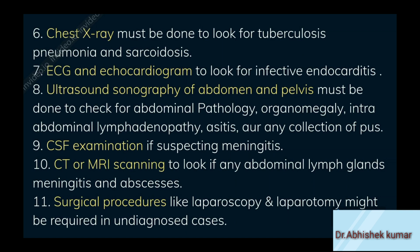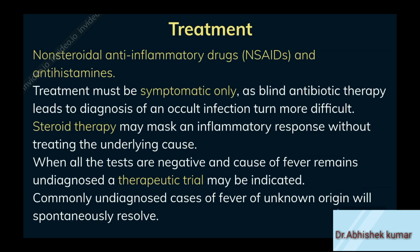7. ECG and echocardiogram to look for infective endocarditis. 8. Ultrasound sonography of abdomen and pelvis to check for abdominal pathology, organomegaly, intra-abdominal lymphadenopathy, ascites, or any collection of pus. 9. CSF examination if suspecting meningitis. 10. CT or MRI scanning to look for abdominal lymph glands, meningitis and abscesses. 11. Surgical procedures like laparoscopy and laparotomy might be required in undiagnosed cases.